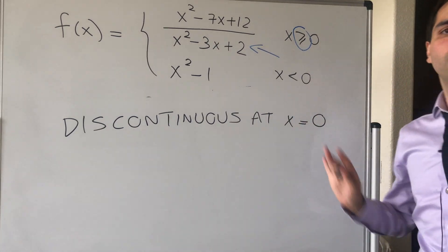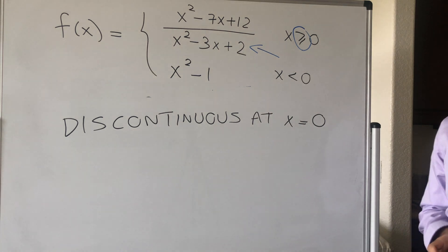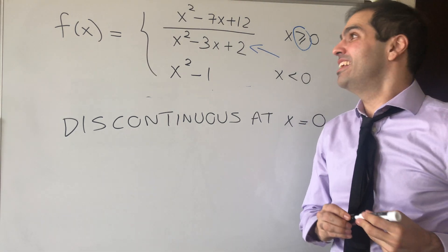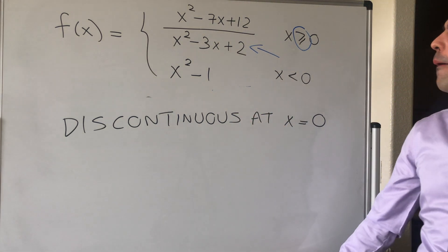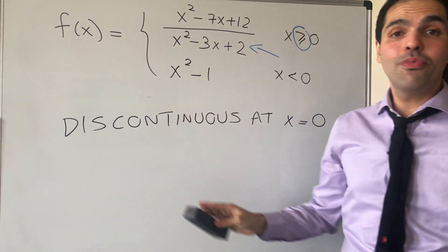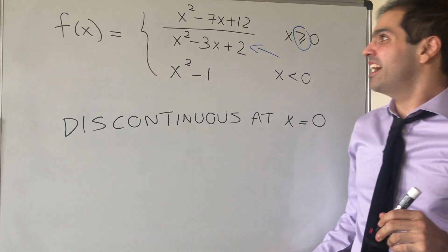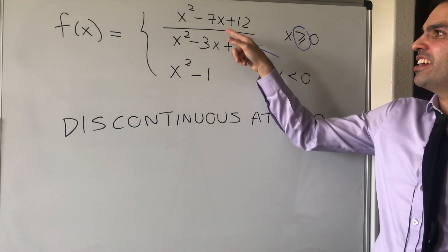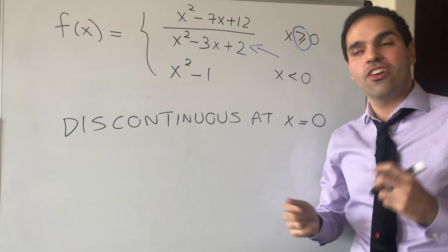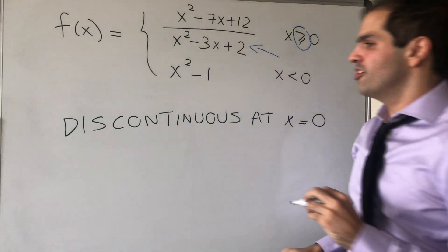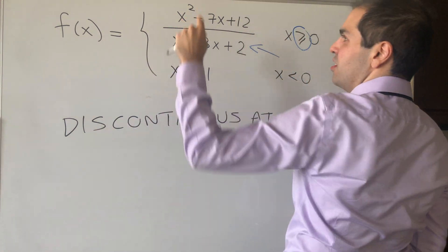So discontinuous at x equals 0. And at this point, I was like, well, I'm done, let's move on to the next problem. But that's why I lost points, because there's something very important that I didn't look at. This function is not defined everywhere. It turns out there are points that are undefined.